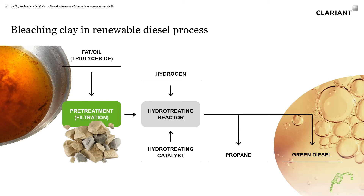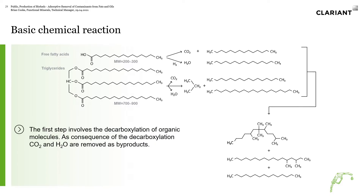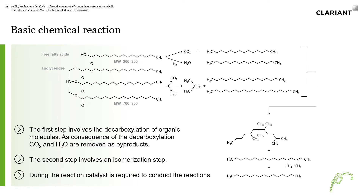Focusing on the pre-treatment process for this reaction — I'm not going to go into all the detail on the chemical reaction that takes place to form the hydrocarbons, but it's basically a decarboxylation of the organic molecules followed by an isomerization step to produce the renewable diesel at the end of the process, as well as propane and some naphtha as byproducts. During the reaction, the catalyst is required to conduct these reactions, and the life of that catalyst is important because it is very expensive.